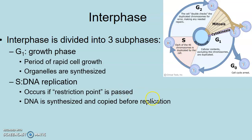One important concept is the restriction point. We want to control our cells — we don't want them just dividing like crazy. That's what happens when cancer occurs: cells just divide out of control. So there are stop gaps in place — chemical signals which tell the cell when it's time to divide and when it's not. If we get past that restriction point, that's when this process occurs.